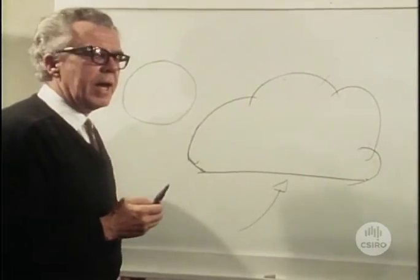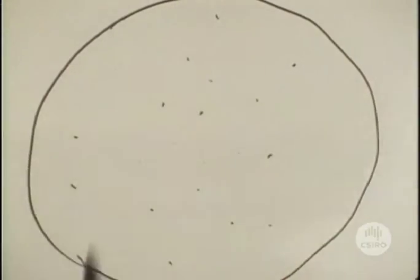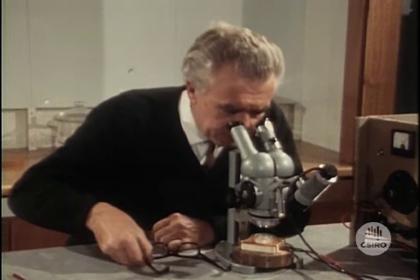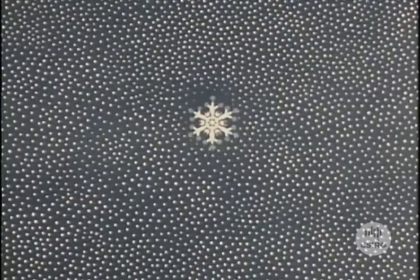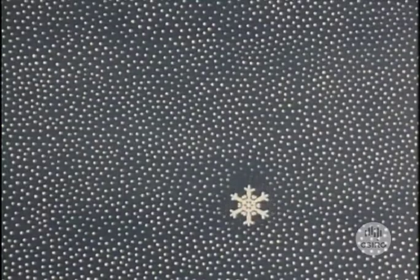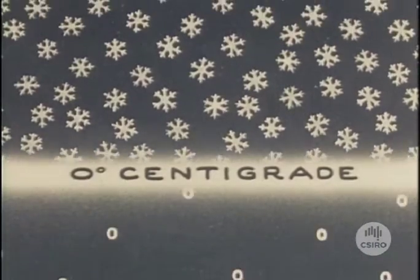How then can a raindrop, which requires a million or more of these tiny droplets, be formed? One way involves the formation of ice crystals. If an ice crystal forms in a cloud which is below freezing point, it grows rapidly at the expense of the surrounding water droplets and becomes a snowflake. The snowflake grows as it falls through the cloud. Pieces may splinter off and these grow into new snowflakes. In most parts of Australia, these snowflakes melt as they fall through the air at lower levels and rain is produced.